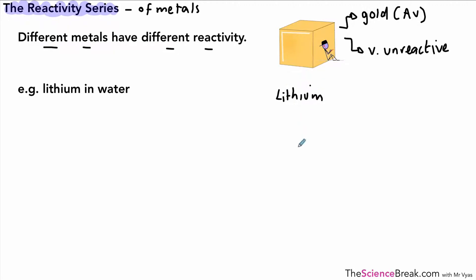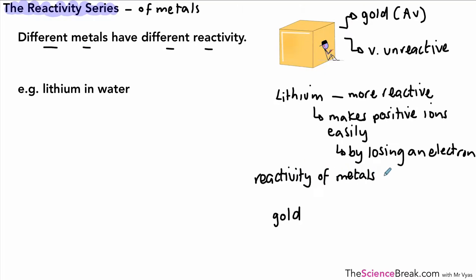If we made a list of lithium compared to gold, lithium would be higher up as the more reactive metal and gold would be further down. The reason why lithium is more reactive is because it will much more easily make positive ions by losing electrons. Lithium, being in group 1, has one electron in the outer shell and will very easily lose that electron to become a positive ion. The reactivity of metals is linked to their tendency to make positive ions.